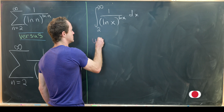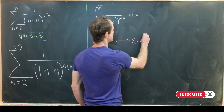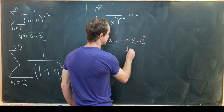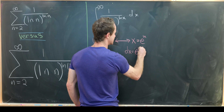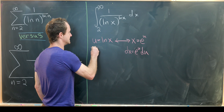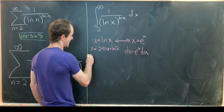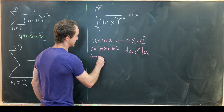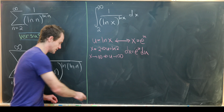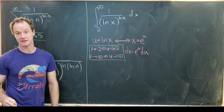We say u equals ln x, which is the same as x equals e to the u. That means dx equals e to the u du. When x equals 2, u equals natural log of 2, and as x approaches infinity, u also approaches infinity. Those two calculations take care of our bounds of integration.